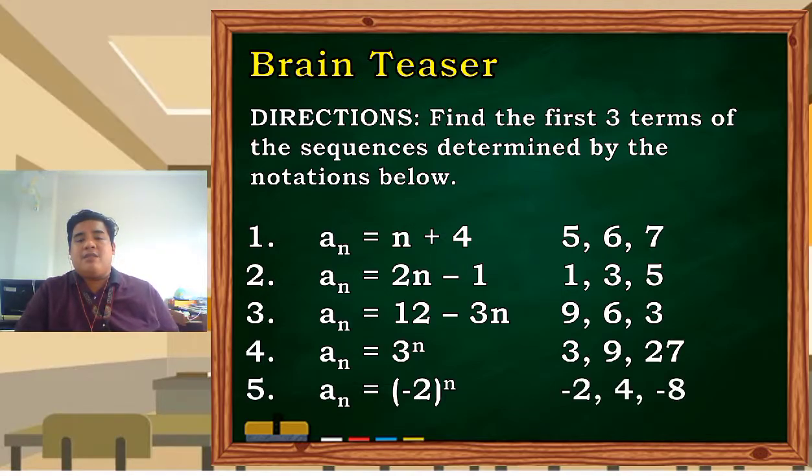And number 5: negative 2, 4, negative 8. But if you notice in number 4 and number 5, it's not a common difference—we are multiplying it. So that is not an arithmetic sequence. Those 2 are not arithmetic sequences. Only number 1, number 2, and number 3 can be said to be arithmetic sequences.